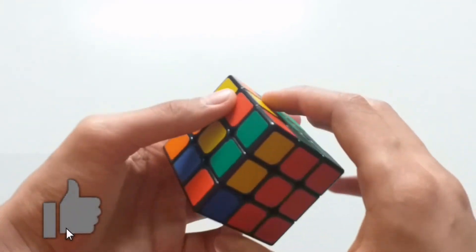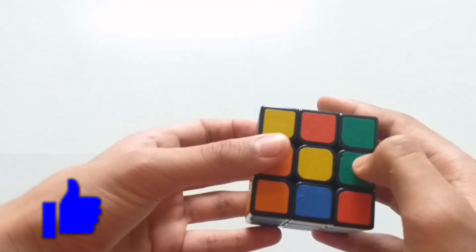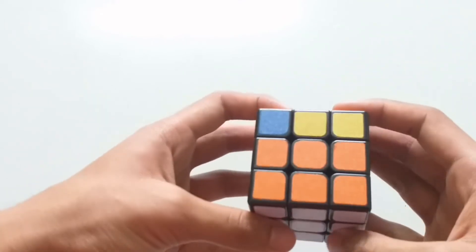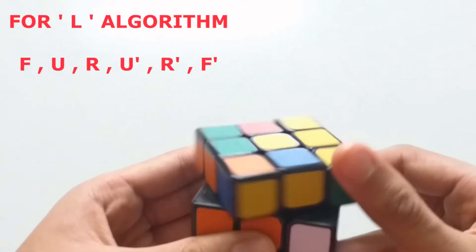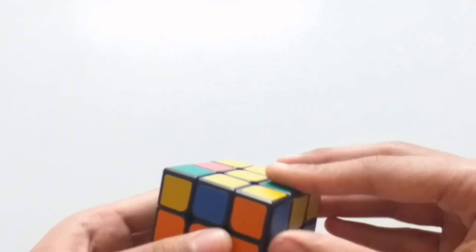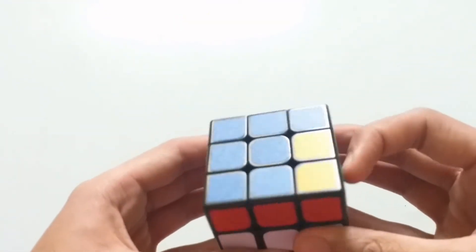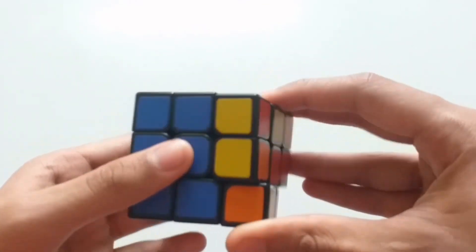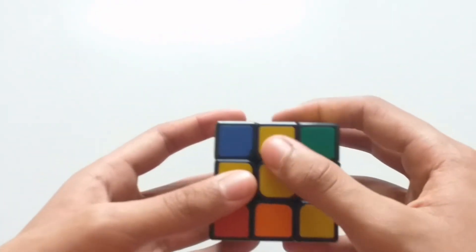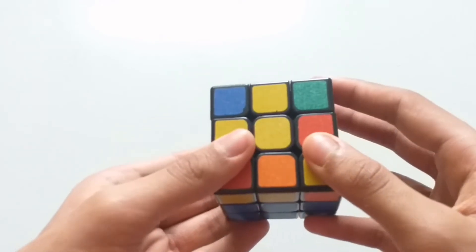After this you have to make an L here. Use the L algorithm and do it till you get the L shape. As you can see we have an L, orient the cube such that the right side is free.